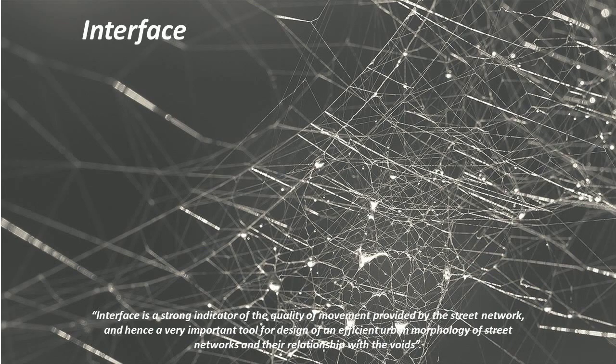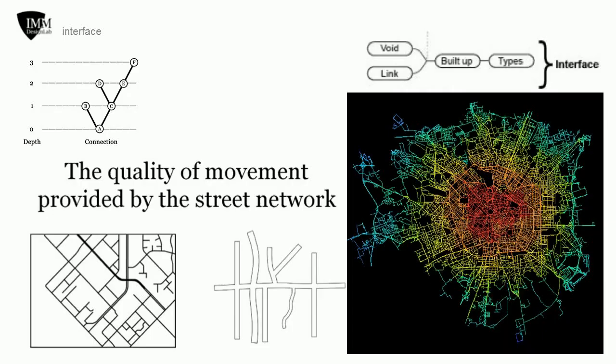In IMM, interface emerges by the combination and synergic integration of links, voids, types of uses, and volume. It is a strong indicator of the quality of movement provided by the street network, and a very important tool for the design of efficient urban morphology of street networks. Interface evaluates the level of integration in the network and gives precise information regarding urban flow. In IMM, interface is assessed by the calculation of the mean depth for each individual link. Interface increases the complexity of the system by increasing the number of possible links to connect two nodes.